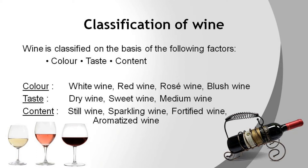The alcoholic strength of fortified wine is increased with the addition of brandy either during or at the end of fermentation. The alcohol strength of fortified wines ranges from 16 to 22% alcohol by volume. This type of wine is also termed as heavy wine; examples are sherry, port, Madeira, and Marsala. Aromatized wines are wines that are fortified and aromatized with herbs, barks, spices, roots, etc. The alcoholic content is 14 to 20%. Vermouth is the most popular aromatized wine.